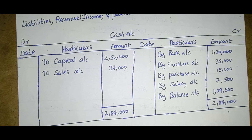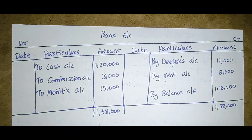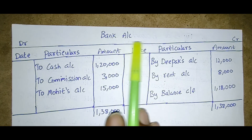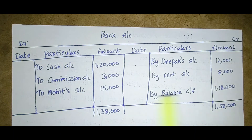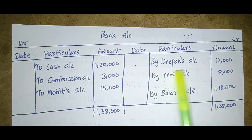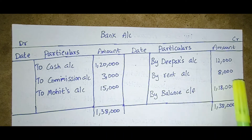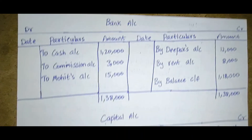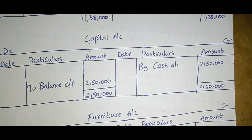Next is the bank account. Debit side — to cash account one lakh twenty thousand, to commission account three thousand, to Mohit's account fifteen thousand; total one lakh thirty-eight thousand. Credit side — by Deepak's account twelve thousand, by rent eight thousand, by balance carried forward one lakh eighteen thousand; total one lakh thirty-eight thousand. Both sides are equal.